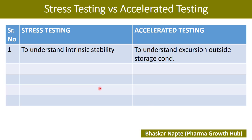The first point for accelerated testing: accelerated testing is generally conducted to understand excursion outside storage conditions. For example, if your product is supposed to be stored below 30 degrees Celsius, is it really always possible to store it below 30 degrees? During transit or transportation, the temperature can go outside 30 degrees Celsius — this is called excursion outside storage condition. How long your product will still remain within the proposed expiry date under such conditions is predicted by accelerated testing.